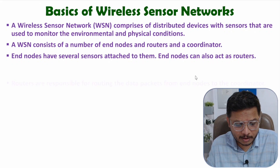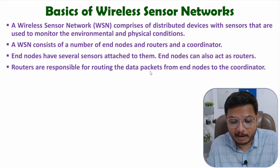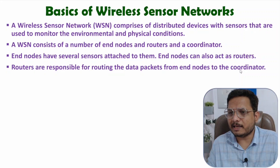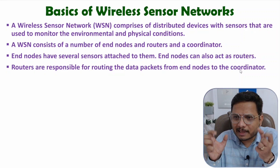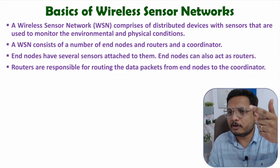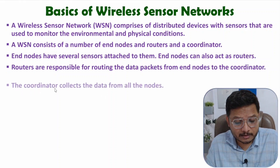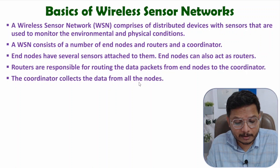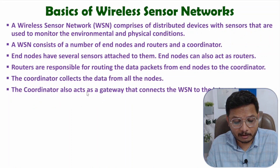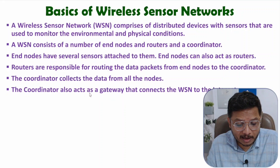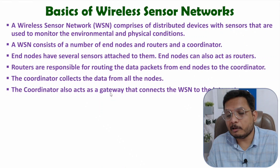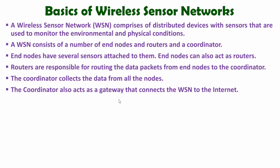Routers are responsible for routing data packets from end nodes to the coordinator. The router gathers data from end nodes and transfers it to the coordinator, which is the gateway. The coordinator will collect data from all the end nodes via the router and will transfer it to the internet — loading that data onto the internet. So in wireless sensor network, we are having end nodes which are using wireless protocols.